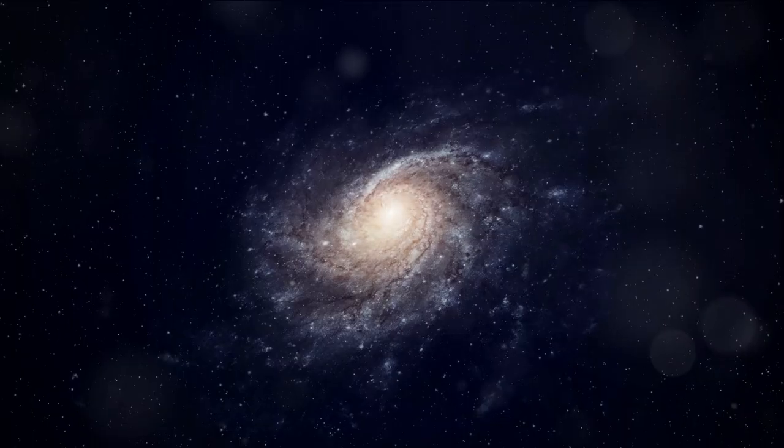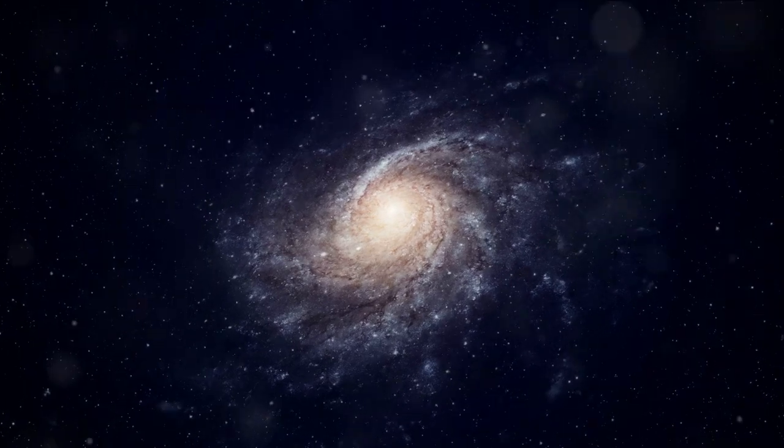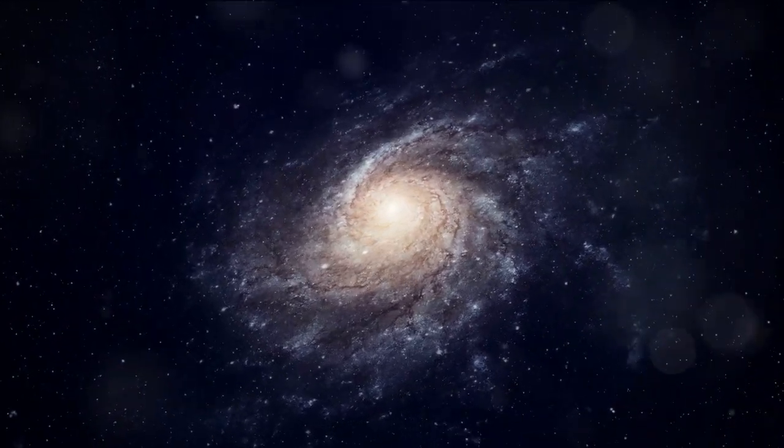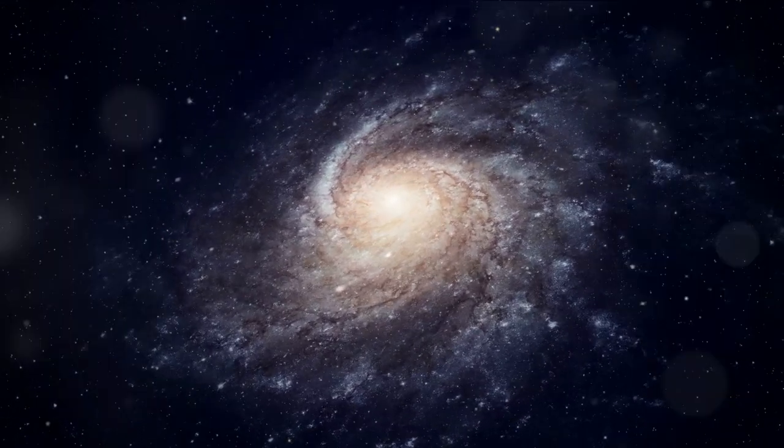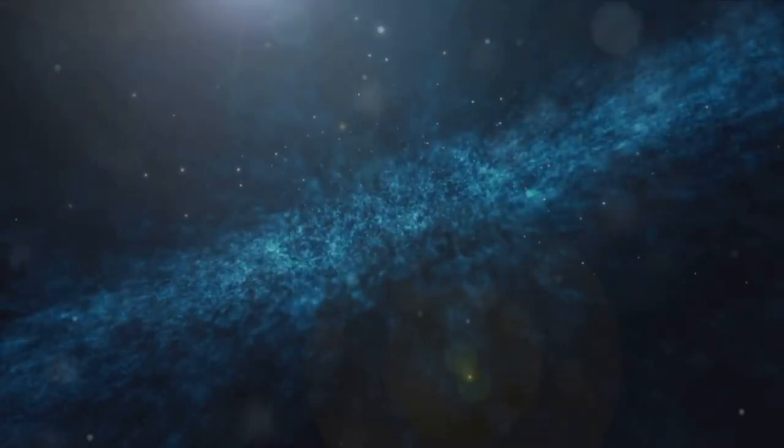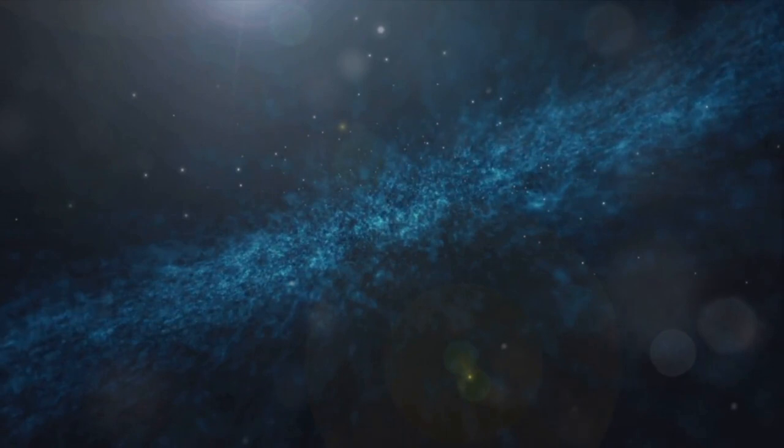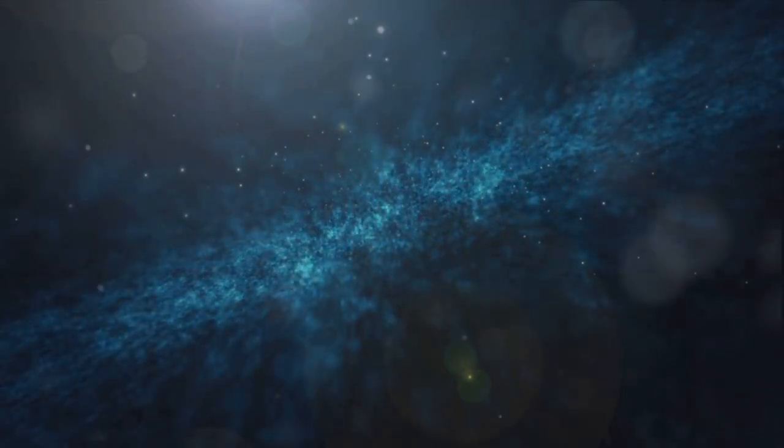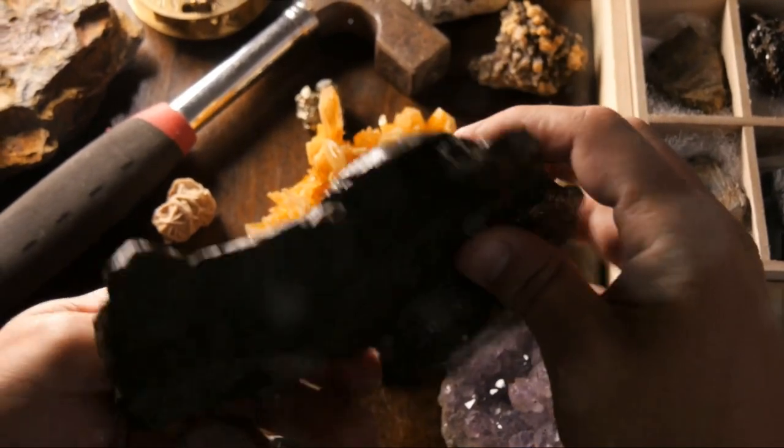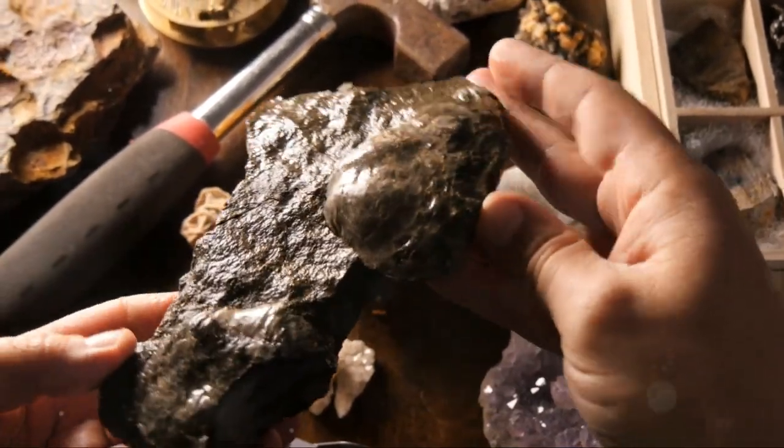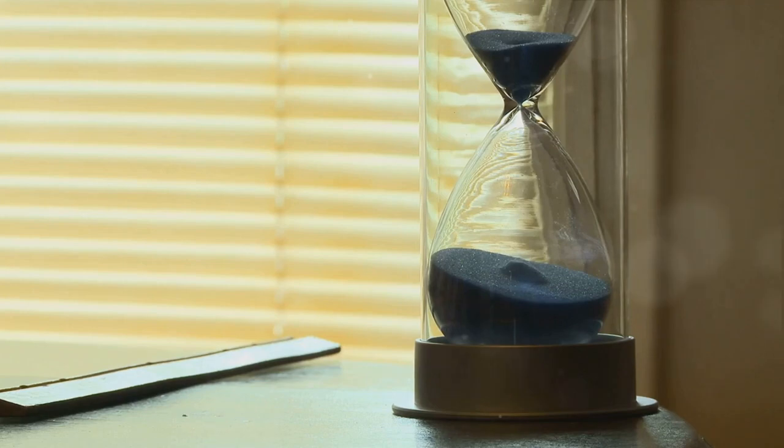Hello, young explorers. Did you know that our universe is incredibly big and incredibly old? Picture the largest thing you can think of, then multiply that by a gazillion. That's how vast our universe is. And guess what? It's been around for a whopping 13.8 billion years. That's billion with a B. It's so old that it makes the oldest dinosaur look like a newborn.